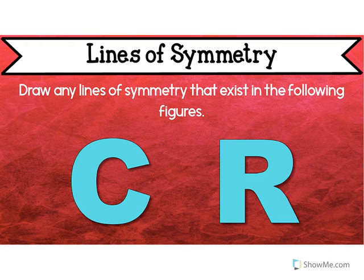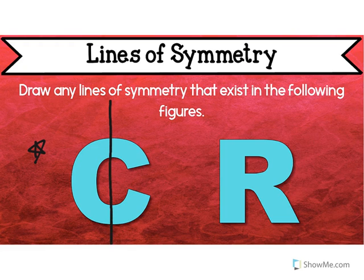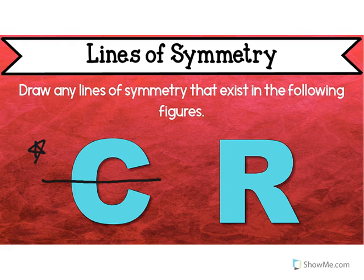Let's do some practice together. I want you to think: where could we find a line of symmetry on this C? Would it be right here? No, it wouldn't be the same on both sides. What about right here in the middle? Yeah, then it would be. Awesome.